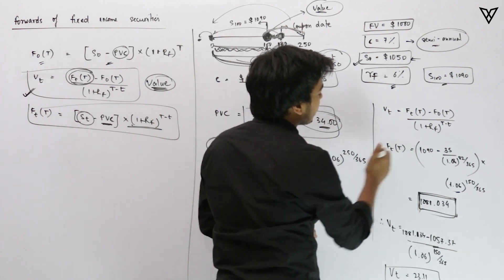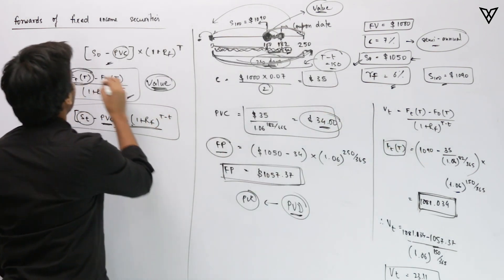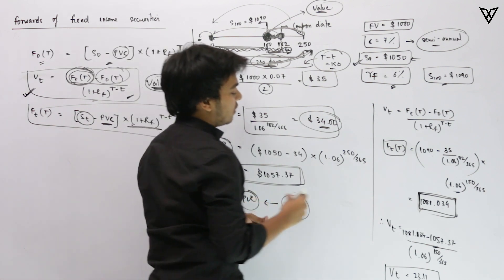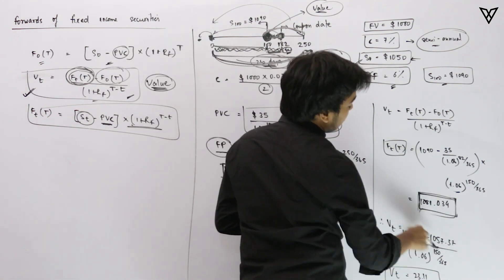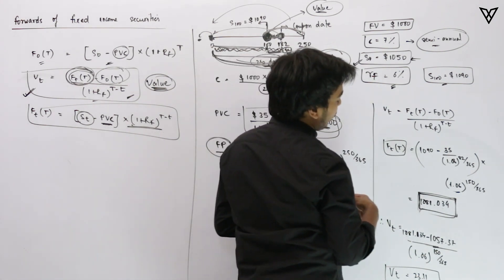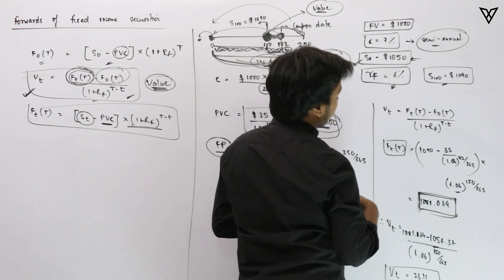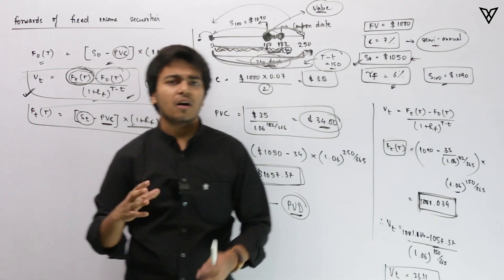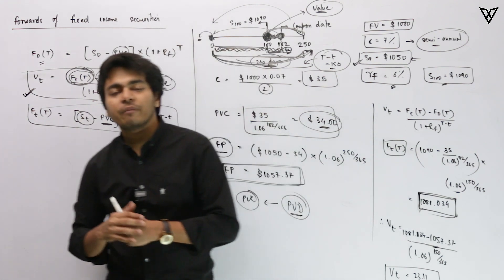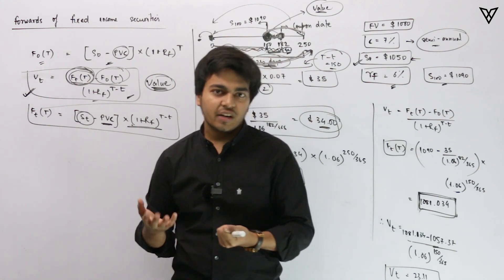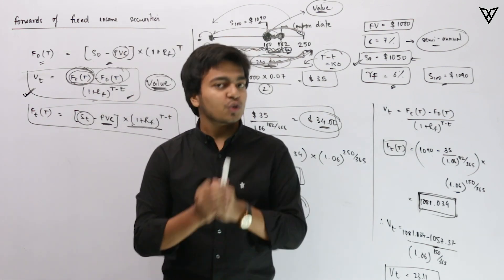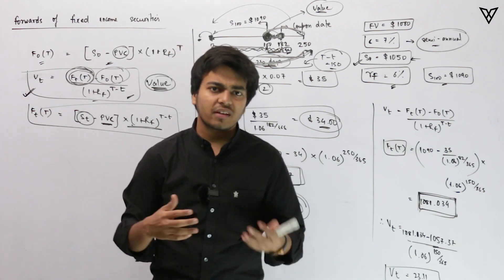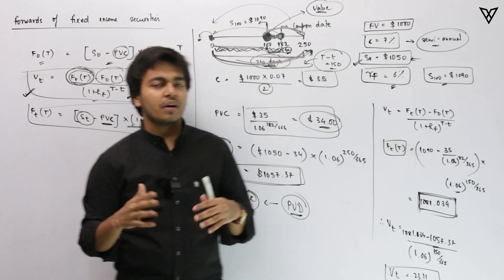Next we calculate the value. We have the new forward price and the old forward price. We discount their difference by (1 + rf)^(T − t). The new forward price is $1,081.34 and the old forward price is $1,057.37. Dividing by 1.06^(150/365) gives a value of approximately $23.11. This is exactly how you calculate the value of a forward contract when the underlying is a bond rather than a stock.